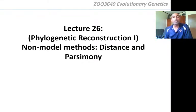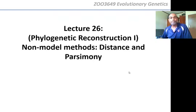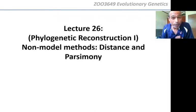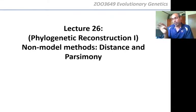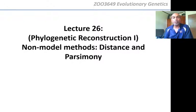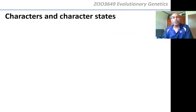We're going to be dealing with two non-model methods called distance and parsimony. When I say non-model, remember you've already been dealing with models in Population Genetics. In the next two or three lectures we're going to be dealing with the model-based ways of building a tree. But these are model-free methods, and you're going to have to know them.